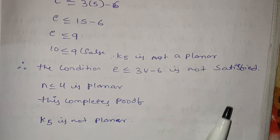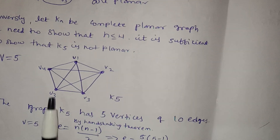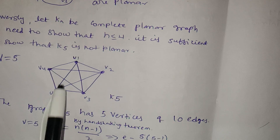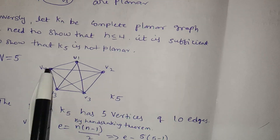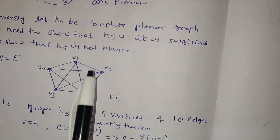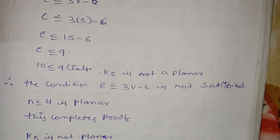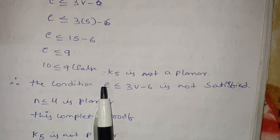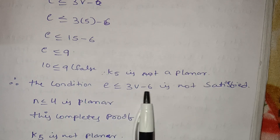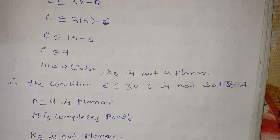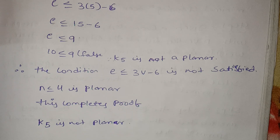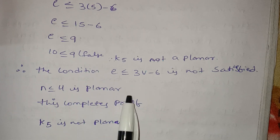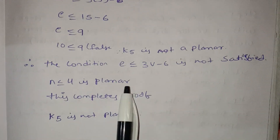K5 is not a planar graph. If we choose K5, there is an edge cross — this is the edge crossing — so the name is not planar. The condition E is less than or equal to 3V minus 6 is not satisfied. Euler's formula is not satisfied. Therefore, K5 is not planar, and Kn is planar only if n is less than or equal to 4.